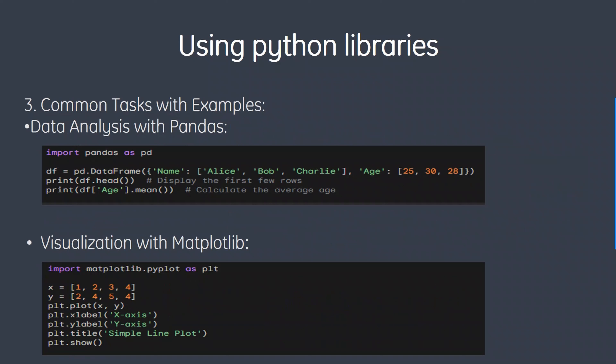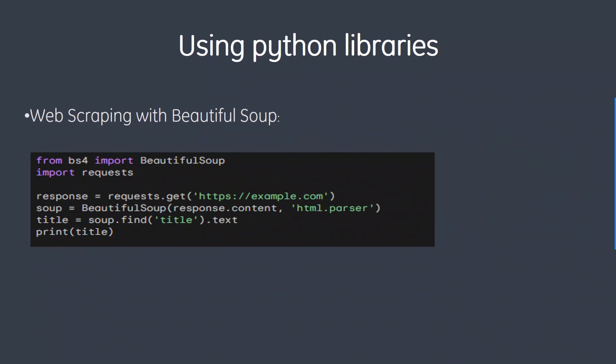Next, we have common tasks with examples. For data analysis with Pandas, a DataFrame is created and we print the column age mean to calculate the average age across the entire column of the dataset. Visualization can also be done with Matplotlib — we import matplotlib as plt, give x and y values, plot them with labeled axes, and set the title as 'Simple Line Plot'. For web scraping with BeautifulSoup, we import the required libraries, make a request to a URL, and print the page title using soup.title.text.